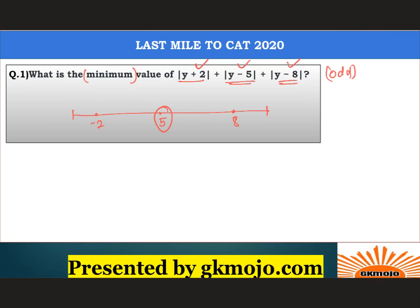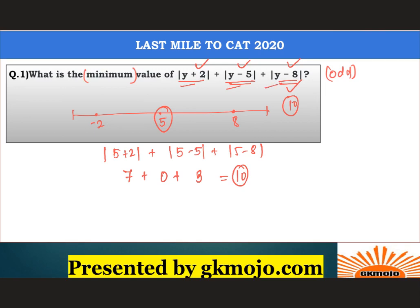Here the center value is 5, so substitute y = 5: |5 + 2| + |5 − 5| + |5 − 8| = 7 + 0 + |−3| = 7 + 0 + 3 = 10. So the minimum value of this expression is 10. The key takeaway is: whenever the number of modulus expressions is odd — whether 3, 5, 7, or 9 — and the minimum value is asked, just take the centermost value on the number line and substitute it for y.